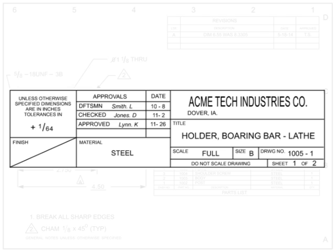The remaining areas of the title block can be tailored for other information, such as material, heat treatment, finishes, weight, general specs and standards, higher assembly information, or superseding information. Other boilerplate information such as copyright information, export control information, design activity, and manufacturing information may also be included in or next to the title block.